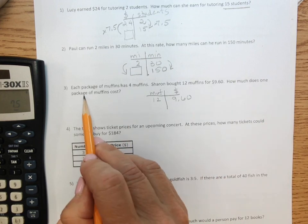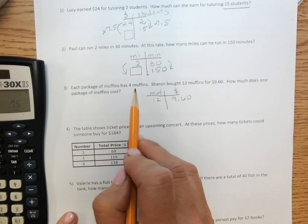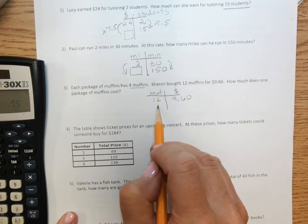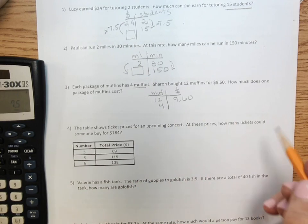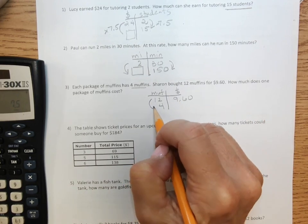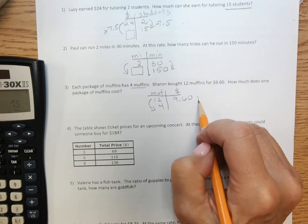And then the question is one package. Well, one package I know has 4 in it. So 4 goes here. And I'm going to find my helper.